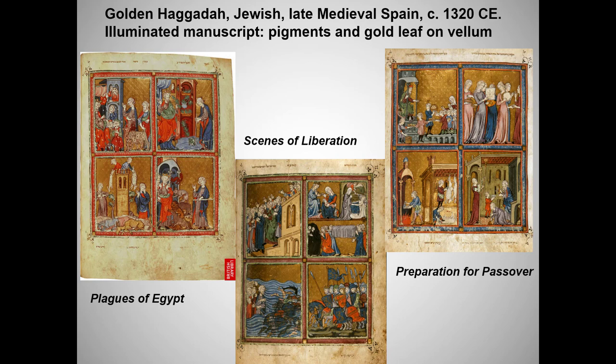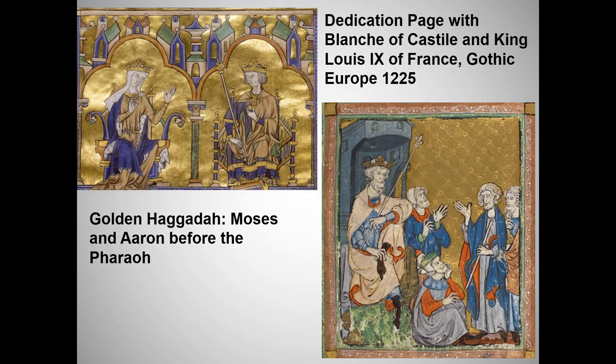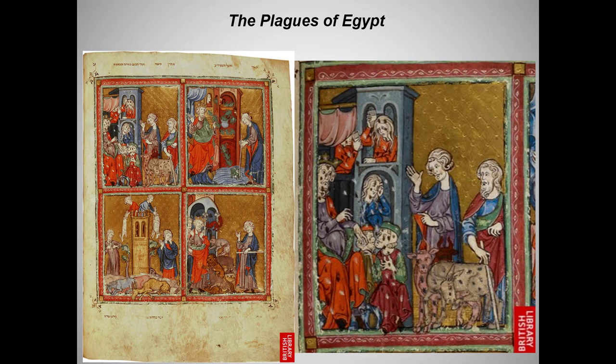I debated where to put the Golden Haggadah and chose to talk about this Jewish manuscript here. It's a debatable choice, since we'll be comparing these pages with Gothic illuminated manuscripts when we get to Christian art. The required French Gothic illuminated manuscript shows a king and queen of France, while the illustration from the Golden Haggadah shows Moses and Aaron coming before the Pharaoh, who looks a lot like a French king. Some art historians think the wealthy Jewish family that commissioned the Haggadah may even have hired Christian Gothic artists to produce it. Many Muslim rulers employed Jews as administrators, physicians, and scholars.